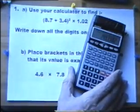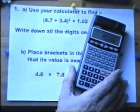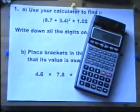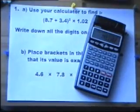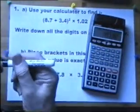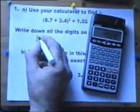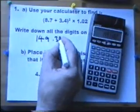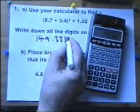Now you are always asked to write down all the numbers in the calculator window. So even if you are not asked to do that, you should always do that when you use a calculator to work out a question. Write down all the numbers in the window. Let's see what I've got here. 1, 4, 9.3382